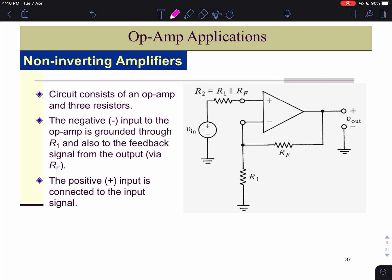The circuit of non-inverting amplifiers consists of an op-amp and three resistors: R1, R2 and RF.